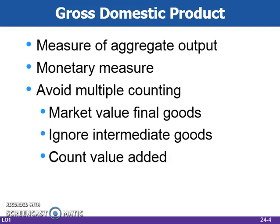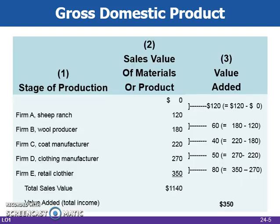GDP could also avoid multiple counting by counting only the value added at each stage. Value added is the market value of a firm's output less the value of the inputs that the firm purchases from others. This table illustrates the value added in a five-stage production process. The value added is calculated as the difference between the sales value of the materials and the value of the good at the previous production stage. Using this method will avoid multiple counting.